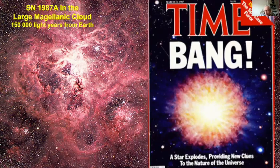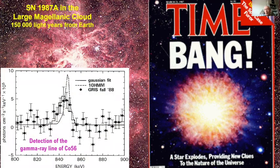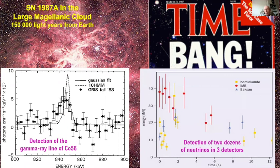Twenty years later, an incredible once-in-a-lifetime event occurred in the Large Magellanic Cloud: Supernova 1987A, the first supernova visible to the naked eye from the southern hemisphere in 150,000 light-years from Earth. Two things confirmed the models: the gamma-ray line from the decay of cobalt-56 was detected, as Clayton, Colgate, and Fishman had predicted — six months earlier than expected due to hydrodynamic mixing instabilities — and about a dozen neutrinos were detected by three different detectors, confirming the Colgate and White model of 1966.